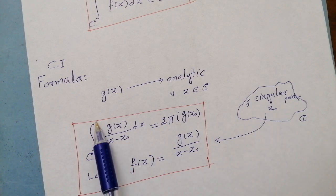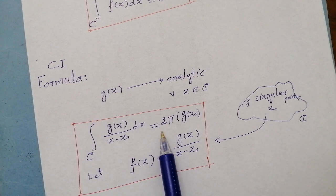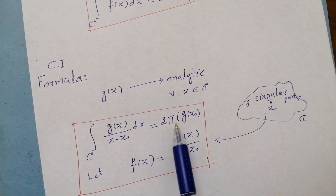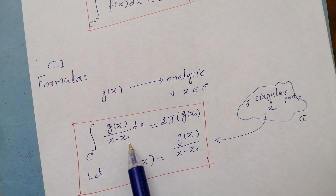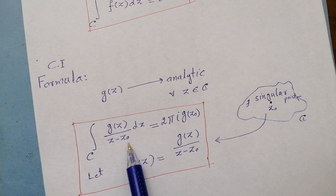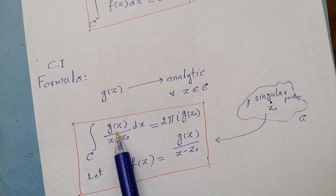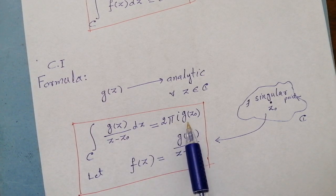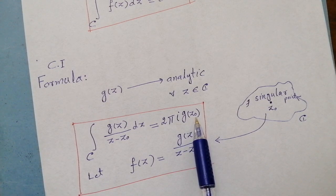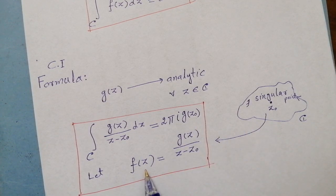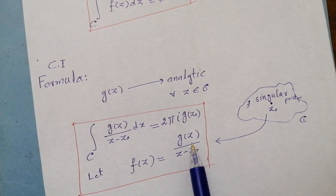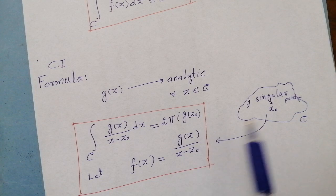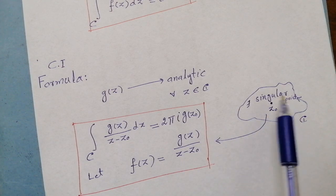In that case, this integral must be equal to 2πi, and we put that point z₀ which is in the denominator into the function g(z) to get g(z₀). So f(z) is not analytic, but the function in the numerator is analytic at all points inside or on the boundaries.